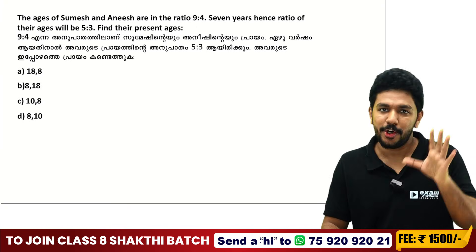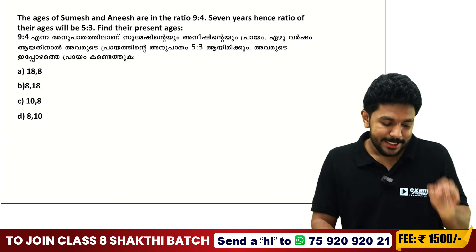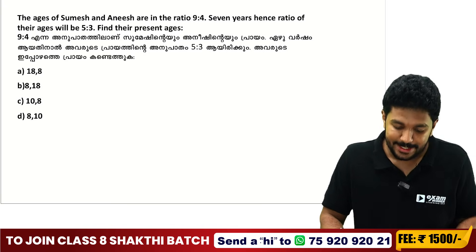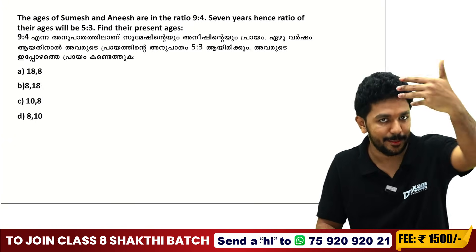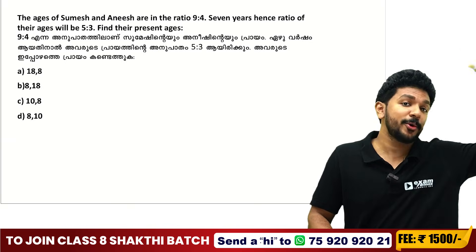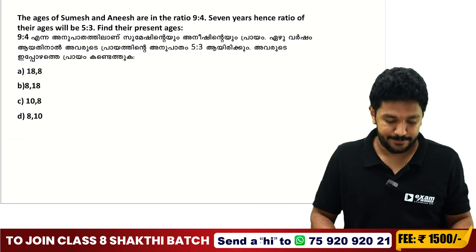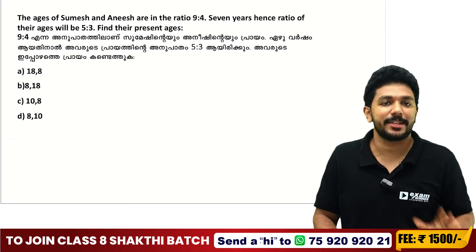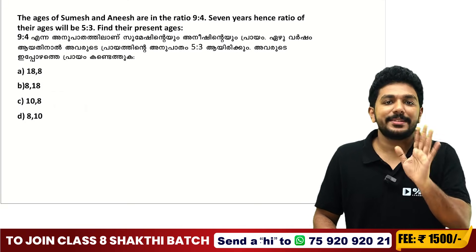Let us start with the first question. The ages of Sumesh and Anish are in the ratio 9 is to 4. Seven years hence — that is 7 years — 8 years ago, the ratio of their ages will be 5 is to 3. Find their present ages.